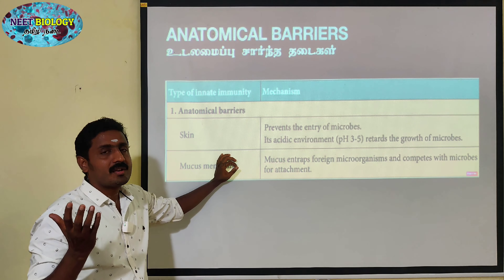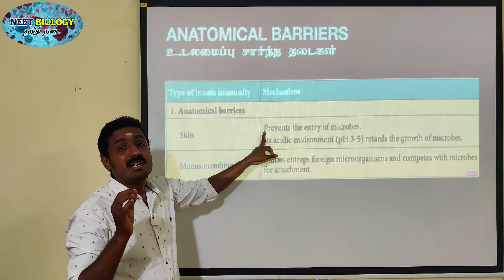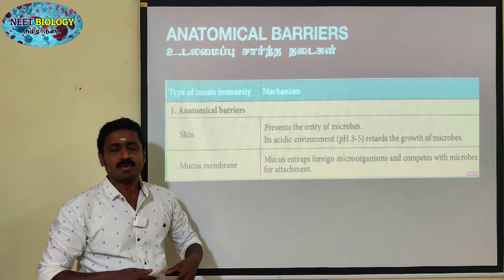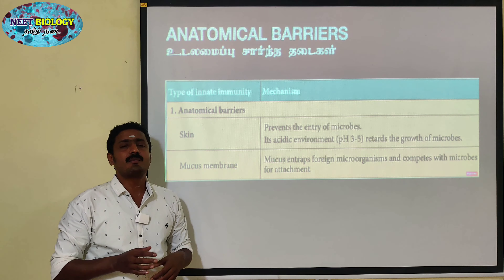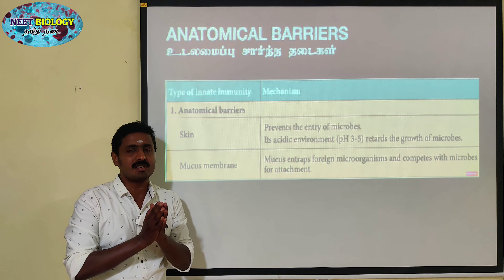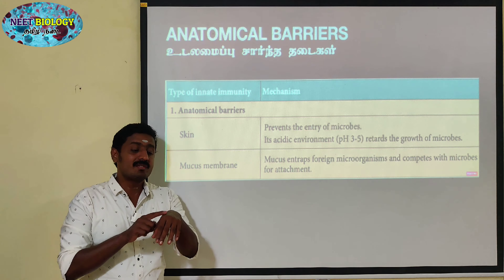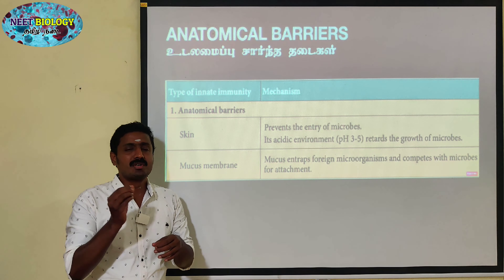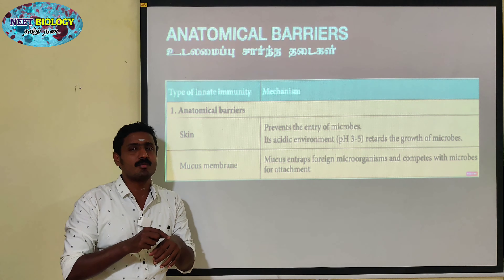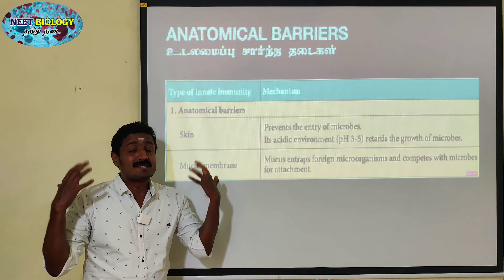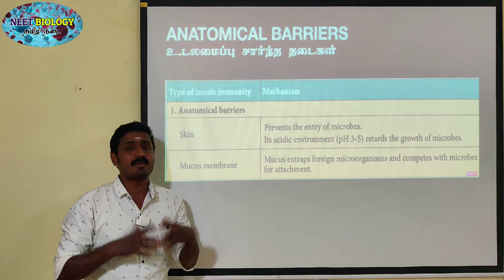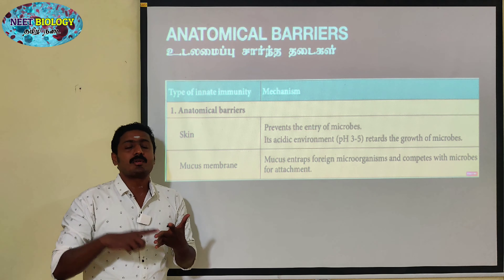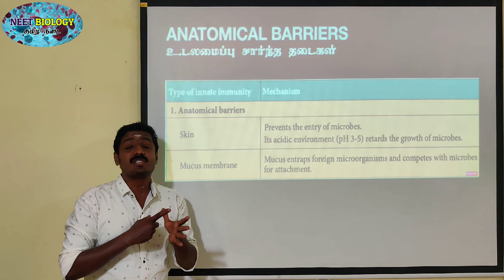The skin prevents microbial entry. It is meant for microbes and protects against damage. For example, our eyes, nose, mouth, anus, and urogenital organs — there are openings in these areas.